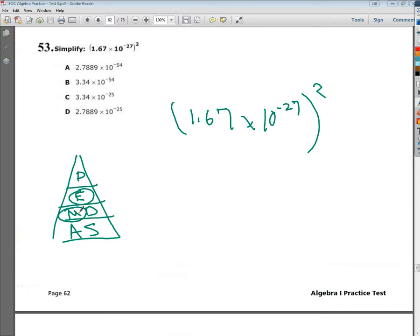So in this case I'm going to go ahead and do the 10 times 10 part, negative 27 times 2 gives me times 10 to the negative 54th.